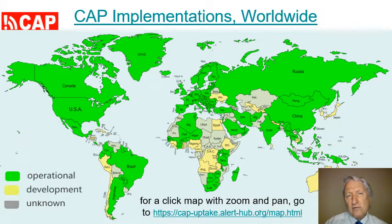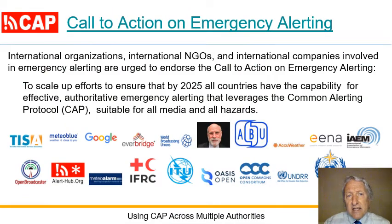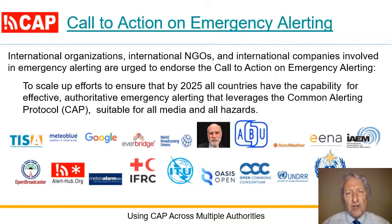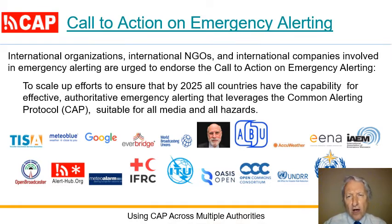Sadly, those are countries where people are especially vulnerable to disasters. So recognizing this CAP implementation gap, international organizations, international NGOs, and international companies involved in emergency alert are urged to endorse the call to action on emergency alerting — to scale up efforts to ensure that by 2025 all countries have the capability for effective authoritative emergency alerting that leverages CAP.